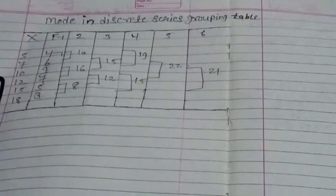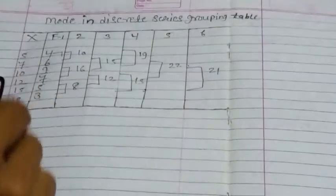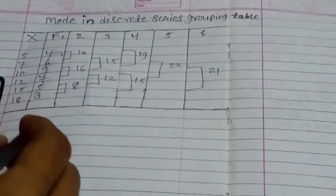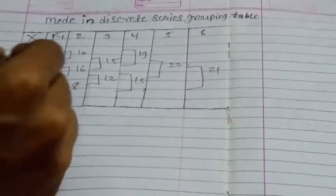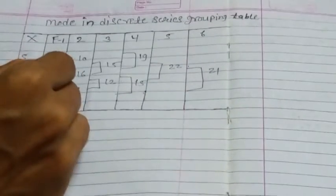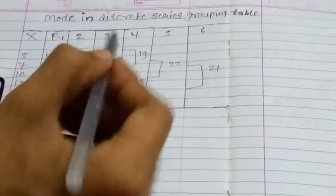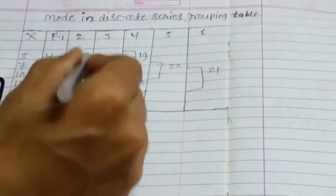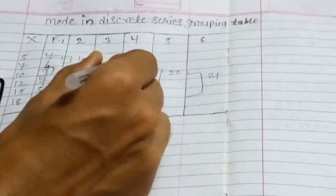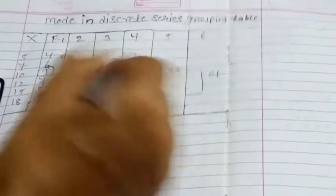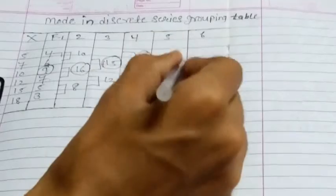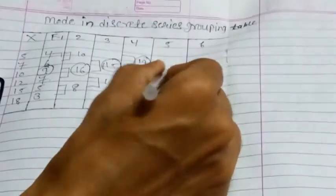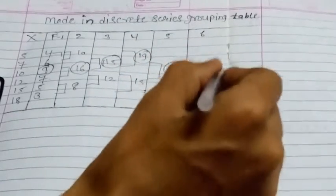Now we have to circle the highest number in every column. In column 1 the highest is 9, in column 2 it is 16, in column 3 it is 15, in column 4 it is 19, in column 5 it is 22, and in column 6 it is 21.